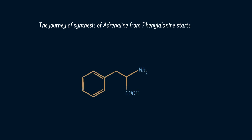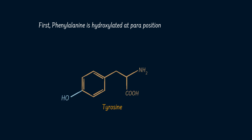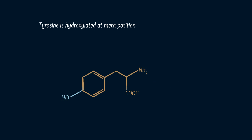The journey of synthesis of adrenaline from phenylalanine starts with two hydroxylation processes. First, phenylalanine is hydroxylated at the para-position to give tyrosine, which is another amino acid. Tyrosine is then hydroxylated again, but this time at the meta-position, to give dopa, which is also an amino acid.